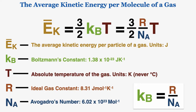The average kinetic energy is equal to 3/2 times k_B, which stands for the Boltzmann constant, multiplied by the temperature. It's also equal to 3/2 times the ideal gas constant over Avogadro's number, again multiplied by the temperature. This implies that Boltzmann's constant is equal to the ideal gas constant over Avogadro's number.